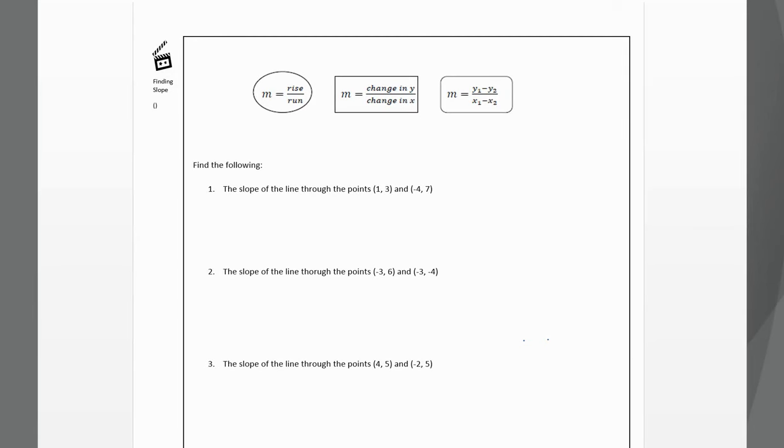Okay, so here's our slope formula: m equals y1 minus y2 divided by x1 minus x2. If we have two points, we're going to label them x1, y1 (the x value of the first point and y value of the first point) and x2, y2 (x value of the second point, y value of the second point).